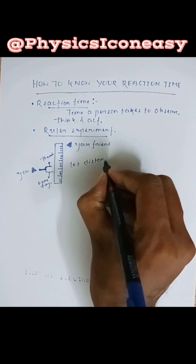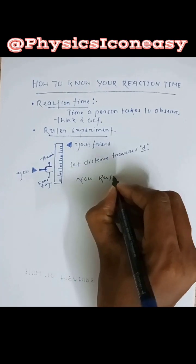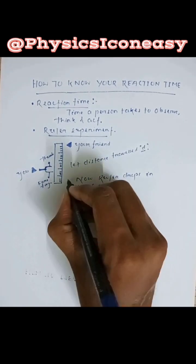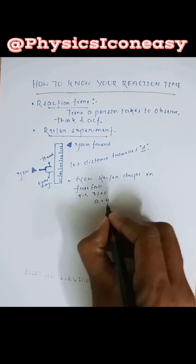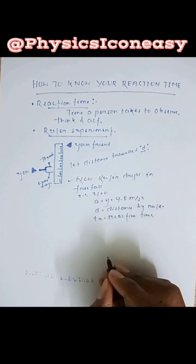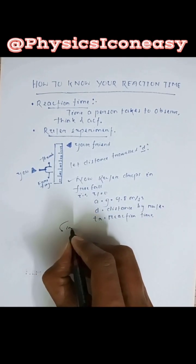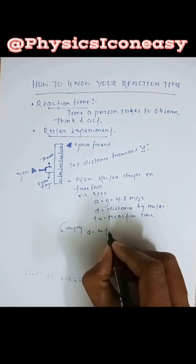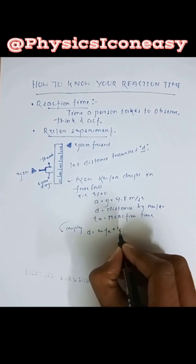Let the distance covered be d. Now the ruler drops in free fall, that is u is 0, a is equal to acceleration due to gravity that is equal to 9.8 meter per second square, d is equal to distance by ruler and t is equal to the reaction time which we want to calculate.